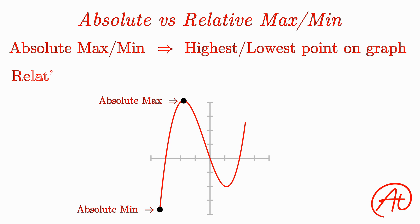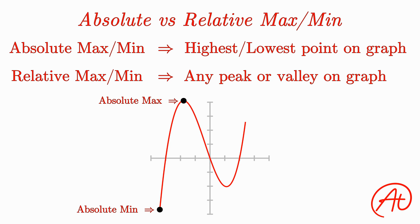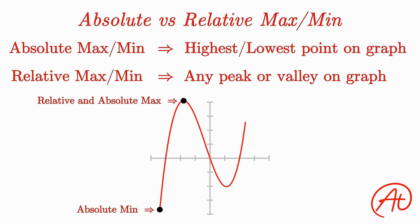A relative max or min is any peak or valley anywhere on the graph. Unlike the absolute max or min, there can be several different relative maximums or minimums along a curve. Additionally, some points can even be both an absolute and relative max or min, like this point. And then finally, this point down here would be a relative minimum.